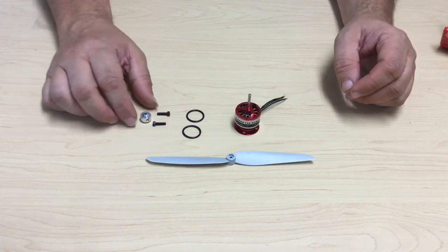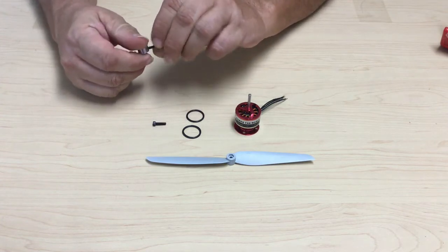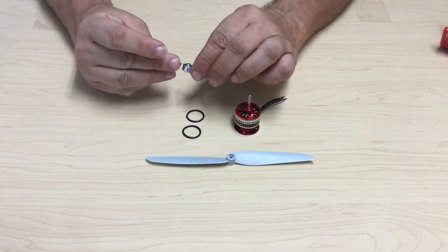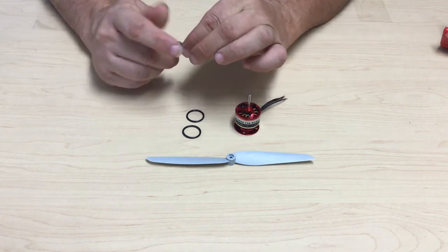Let's assemble the prop saver. We take the screws and we insert them in both sides of the prop saver. We don't want to tighten them all the way in, just tighten them in enough so that they stay.